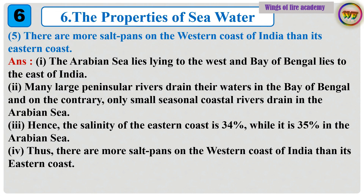Question 5: There are more salt pans on the western coast of India than its eastern coast. Answer: The Arabian Sea lies to the west and Bay of Bengal lies to the east of India. Many large peninsular rivers drain their waters into the Bay of Bengal, and on the contrary, only small seasonal coastal rivers drain into the Arabian Sea. Hence, the salinity of the eastern coast is 34%, while it is 35% in the Arabian Sea. Thus, there are more salt pans on the western coast of India than its eastern coast.